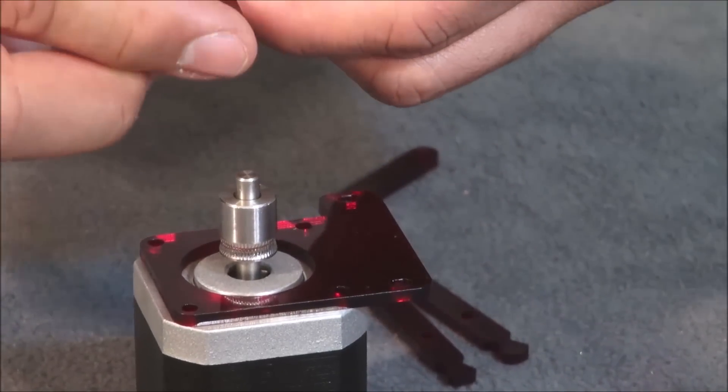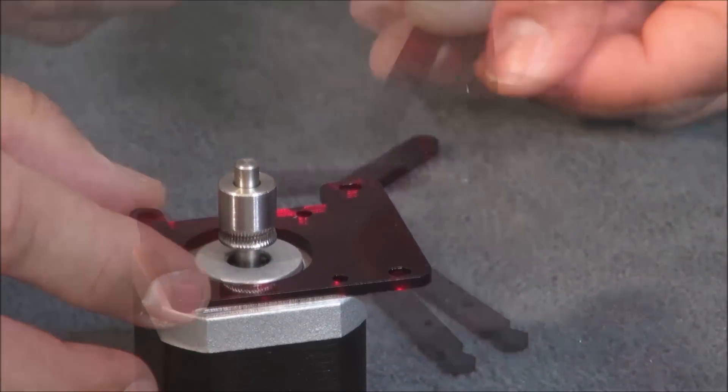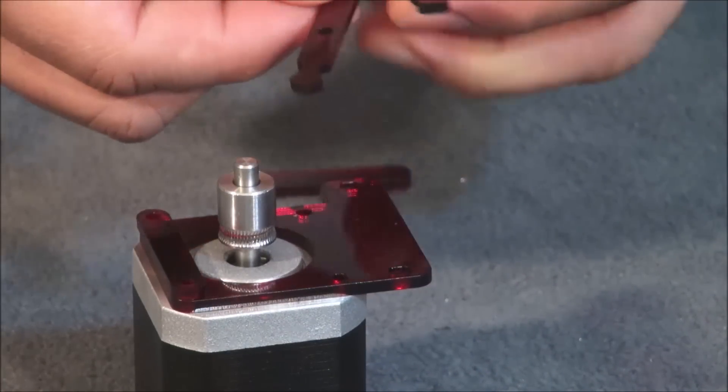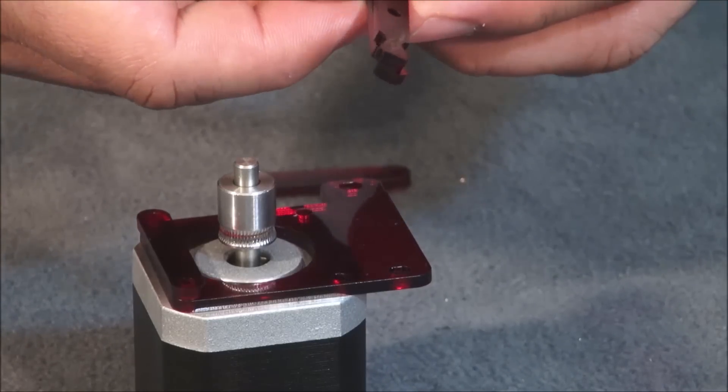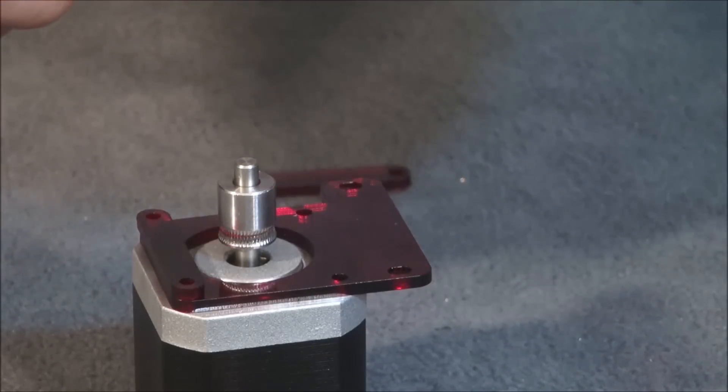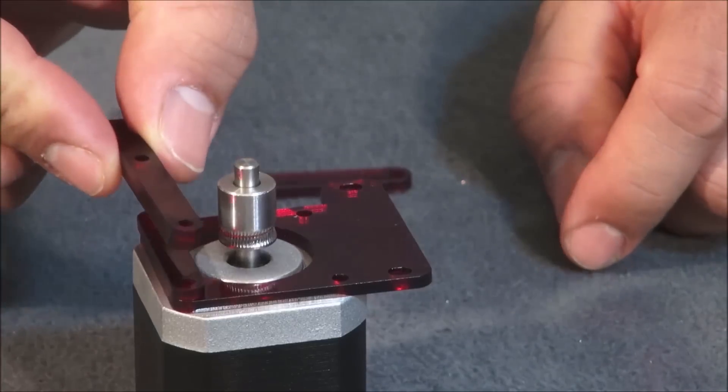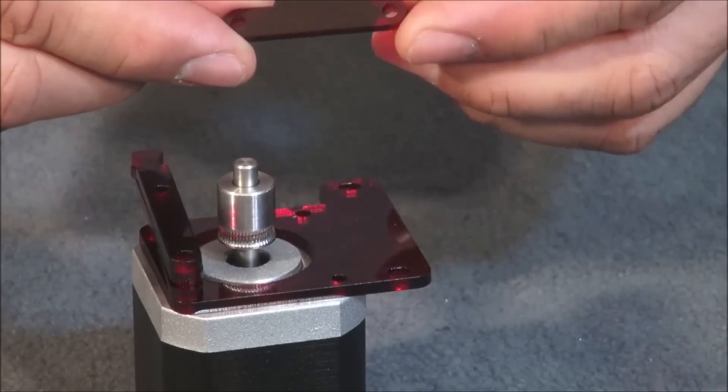First, you're going to take this piece and it goes down first. Then you're going to take the two ends with the little notches. Place them on top of each other and put them on top, and then you'll take the other rounded piece on the very top.